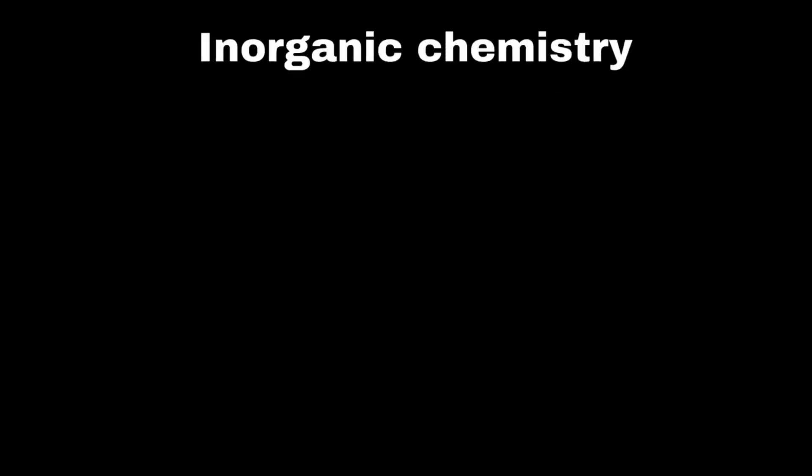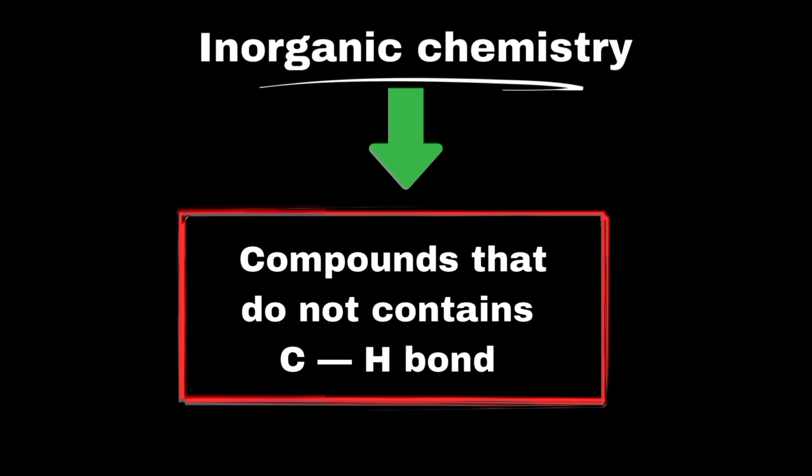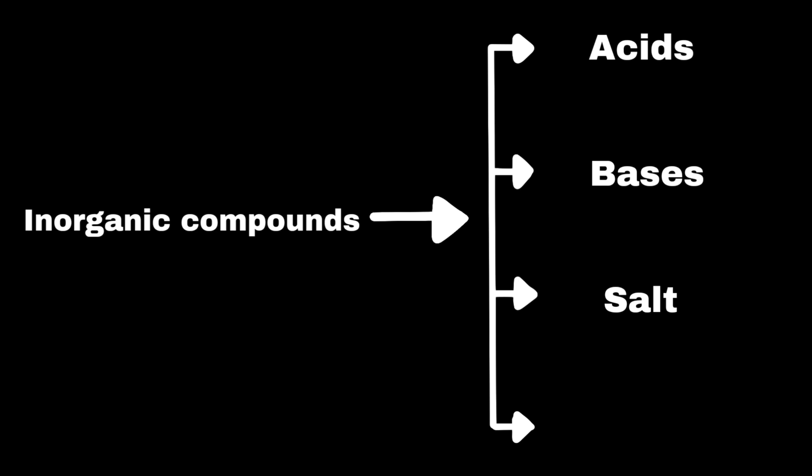Inorganic chemistry is the branch of chemistry that studies compounds that do not contain carbon-hydrogen bonds. Inorganic compounds can be classified into four main types, such as acids, bases, salts, and oxides.